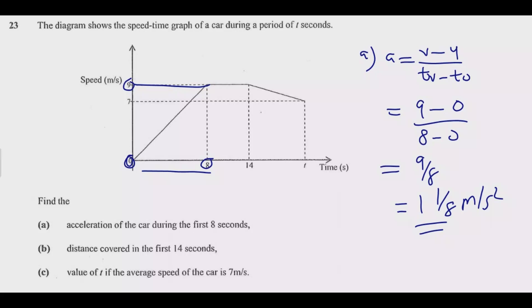Part B: distance covered in the first 14 seconds. When asked to find the distance, just find the area under the curve. So in the first 14 seconds, we can divide this area into two parts, which will be A, and this part which we shall call B. The area is equal to A plus B. That's the area in the first 14 seconds. This is a rectangle, this is a triangle.